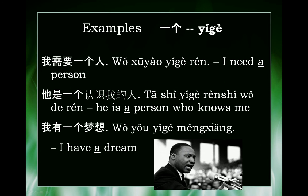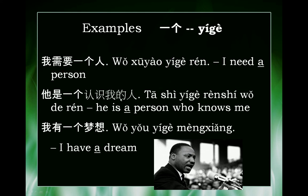Here are some cool examples. Firstly, pretend there's someone up on the stage and they need to call one of the audience members to come forward. They can say: 我需要一个人 — 'I need a person.' And then: 他是一个认识我的人 — 'He is a person who knows me.' 认识我的人 means 'person who knows me.'